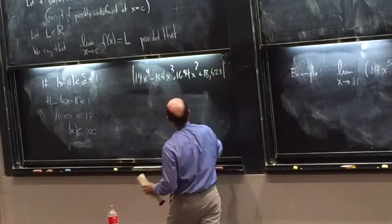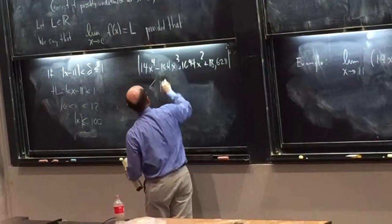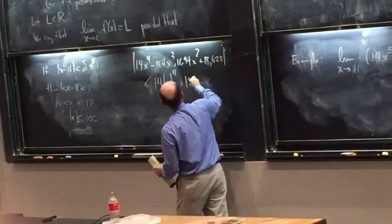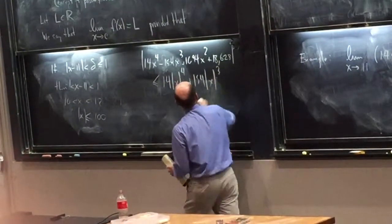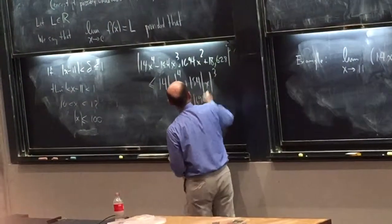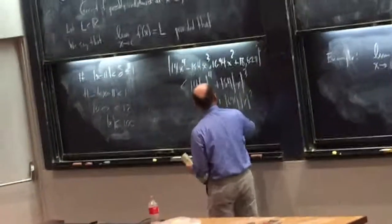I think I got this wrong now. But anyway, is less than 14 times x to the fourth, plus 154 times x cubed, plus 1694 times x squared. I think that's a real term. Well, let's see.